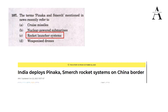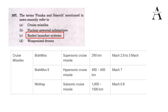Moving to cruise missiles: India has BrahMos, BrahMos 2, and Nirbhay. Nirbhay is indigenously developed, while BrahMos was co-developed with Russia. BrahMos is supersonic, BrahMos 2 is hypersonic, and Nirbhay is subsonic with a speed of Mach 0.8 — less than the speed of sound. Nirbhay has a range of 1,000 to 1,500 kilometers. Supersonic and hypersonic missiles travel above Mach 1, with hypersonic reaching Mach 7.